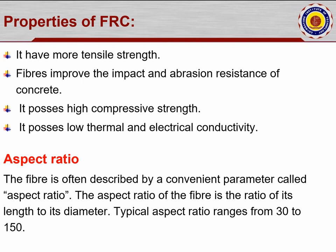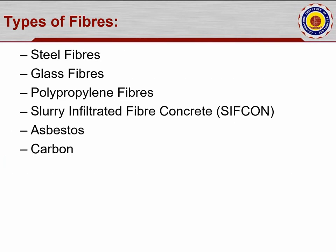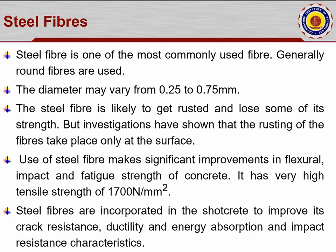Fiber reinforced concrete possesses low thermal and electrical conductivity, which is another advantage. The fiber is often described by a convenient parameter called the aspect ratio — the ratio of its length to its diameter, the L/D ratio. The typical aspect ratio ranges from 30 to 150. The types of fiber include steel fibers, glass fibers, polypropylene fibers, slurry infiltrated fiber concrete (SIFCON), asbestos fiber, and carbon fiber.